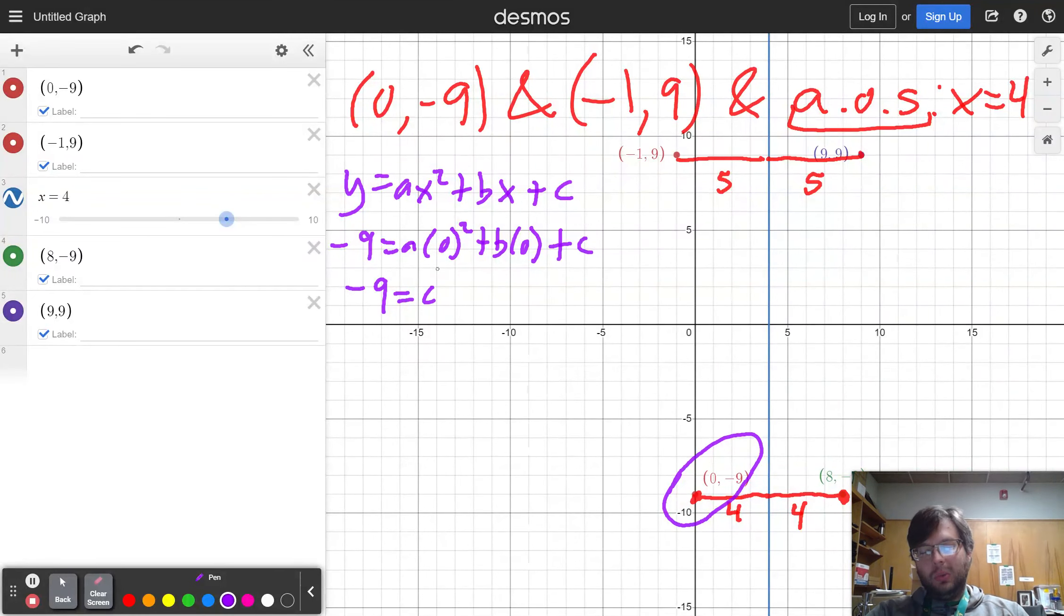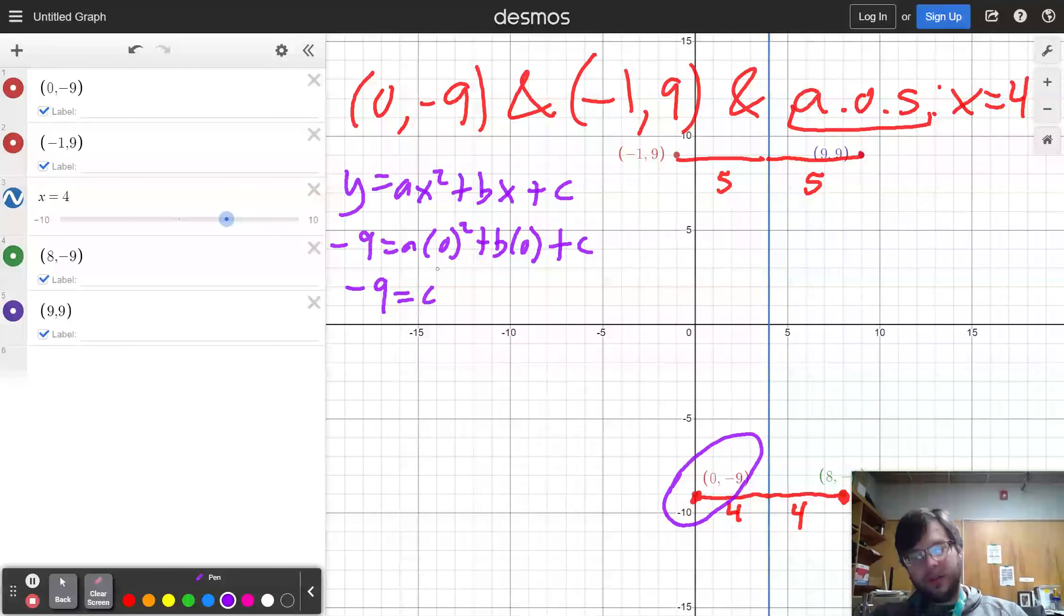I've been telling you that the y-intercept is the c value. Don't just take my word for it. Understand why that's true. It's true because if you plug in x equals 0, then the y value has to equal c.